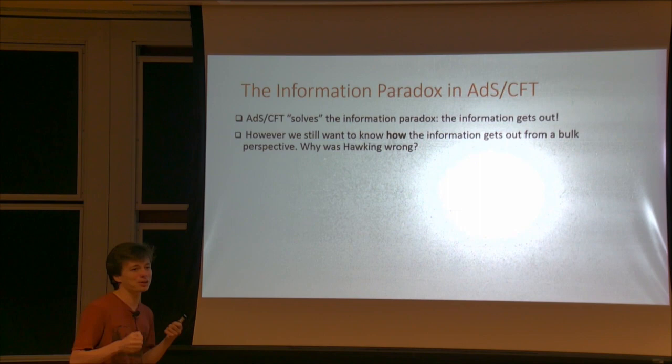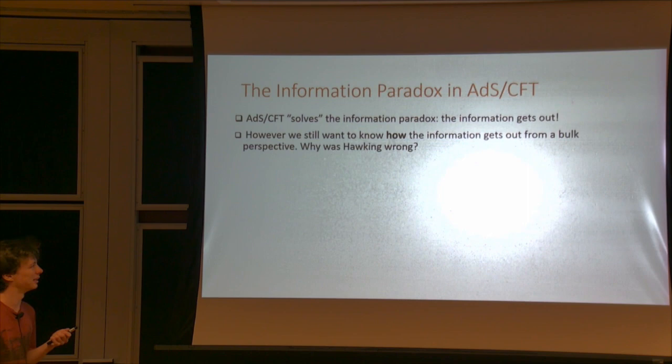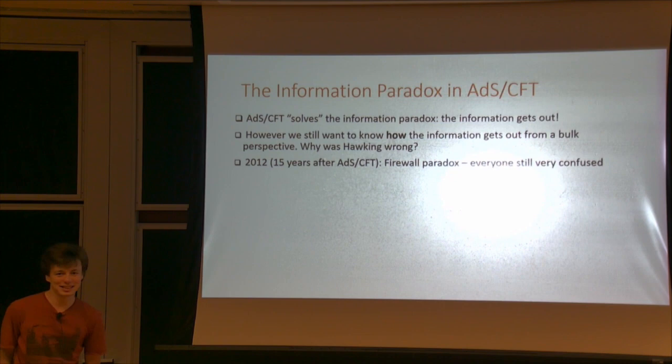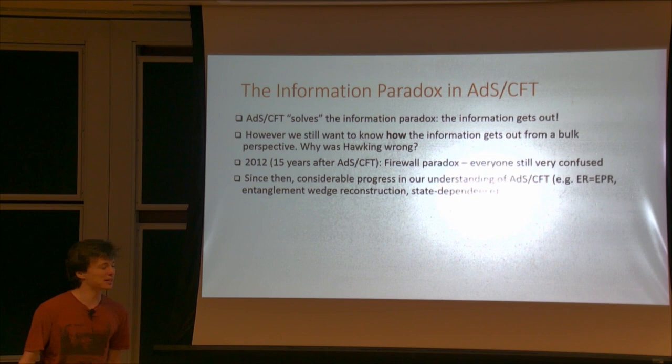So why were we wrong? Why is this bulk calculation that's seemingly very robust — it seems like it shouldn't break down — actually gives completely the wrong conclusion? And if there's one thing we can take away from the whole firewall saga in 2012, it's that 15 years after one came up with ADS-CFT as a field, everyone was still pretty confused about how that was meant to all work.